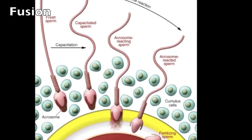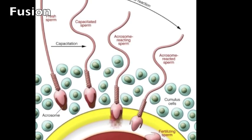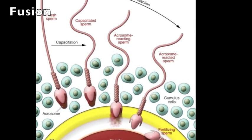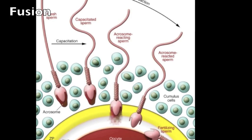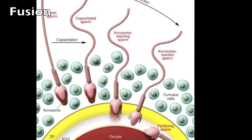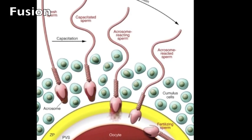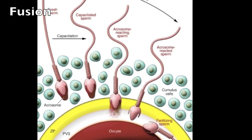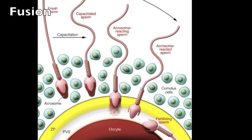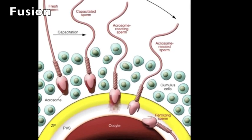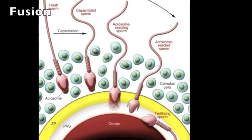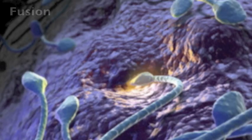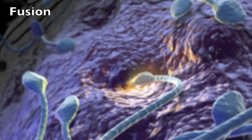The mitochondria from the sperm begin to degenerate to provide material for the first mitotic division. This is why all mitochondrial DNA in humans is maternal. Eventually, the two pronuclei — which are the two nuclei with the half-set of DNA — one from the female's egg and one from the male sperm,